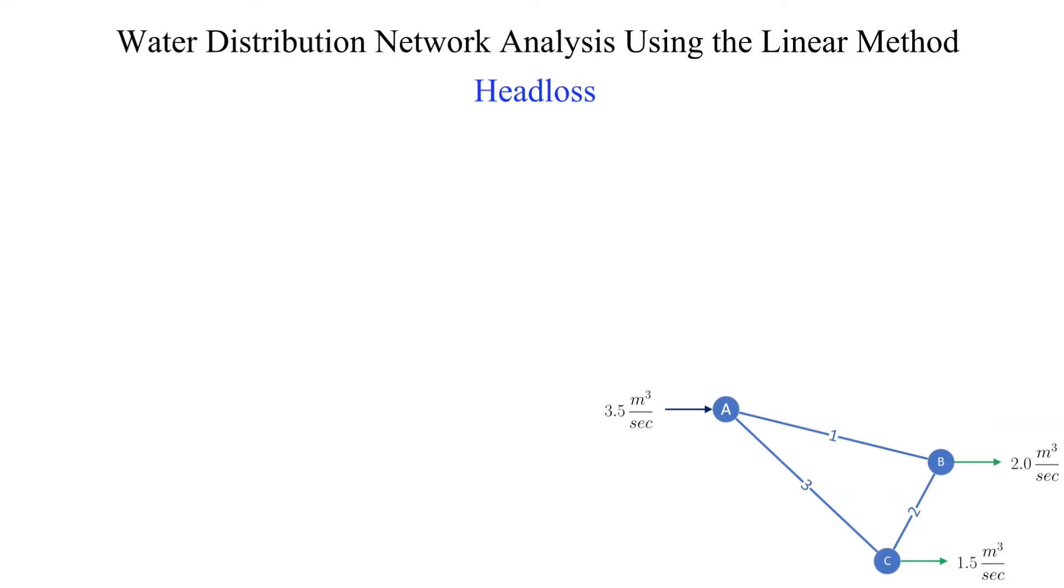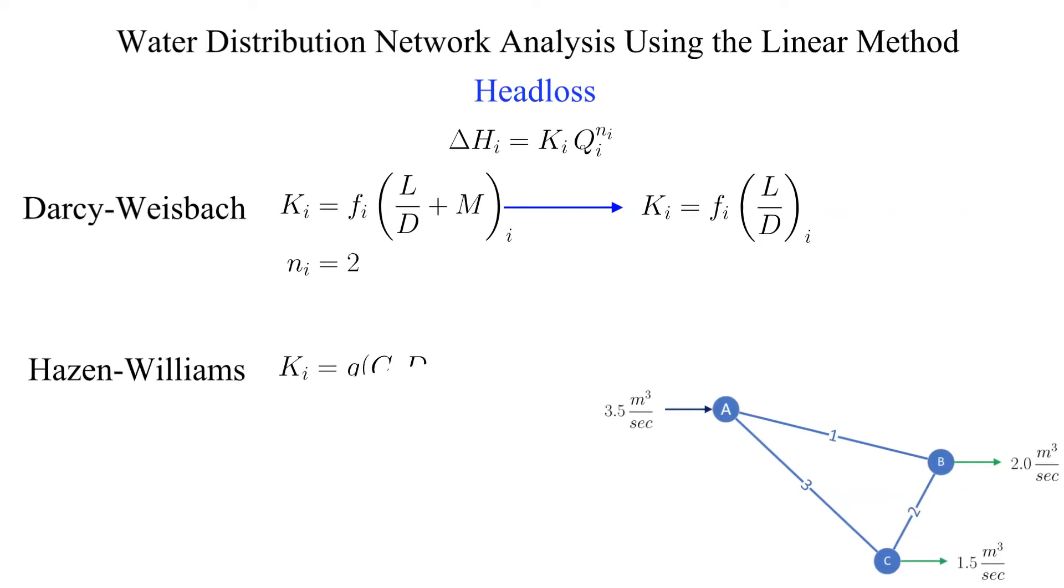We will need equations to calculate the head loss in a pipe. A general form that can be applied for a variety of methods is that the head loss delta H equals a coefficient k times the volumetric flow rate raised to the nth power. Two of the many possible different head loss correlations are shown in the Darcy-Weisbach and the Hazen-Williams correlations.